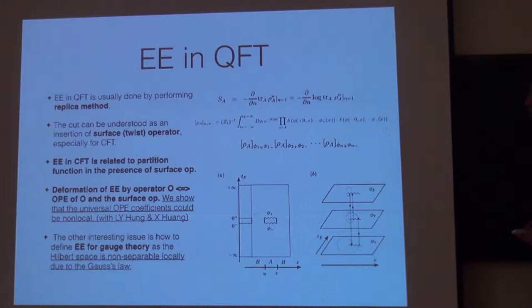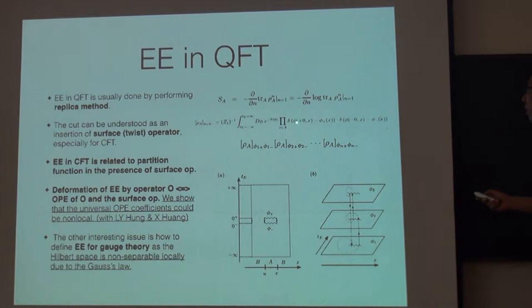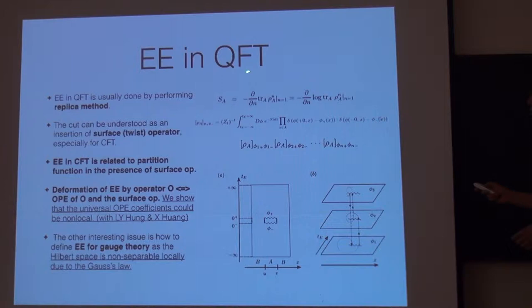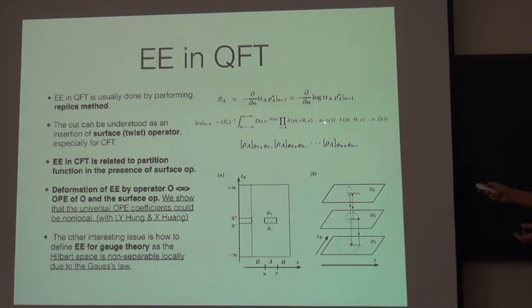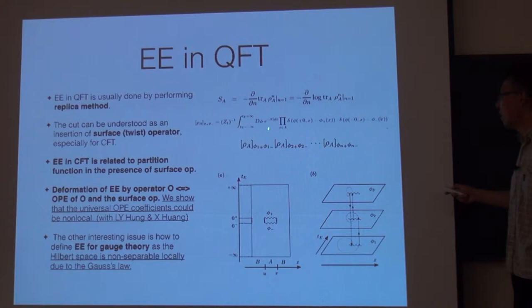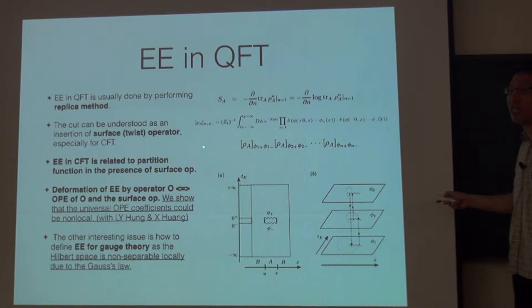And as I said, actually it's nowadays an industry to calculate entanglement entropy in quantum field theory because it's a very difficult task. You cannot calculate directly because you want to calculate von Neumann entropy, it's very difficult. It involves log of operator. So what we do is we calculate the so-called Renyi entropy, which basically is the moment of the von Neumann entropy. So it's a trace of rho A to the m power. So if we can calculate this, then by taking this operation, we can get a von Neumann entropy.